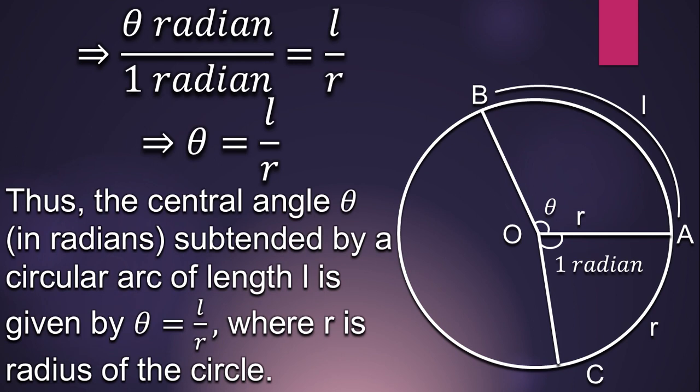And this shows that the central angle theta in radians subtended by a circular arc of length L is given by theta equals L by R, where R is the radius of the circle.